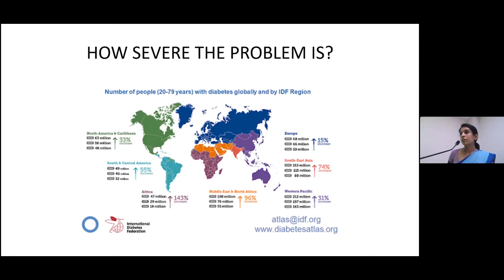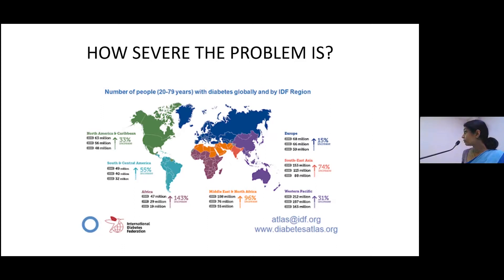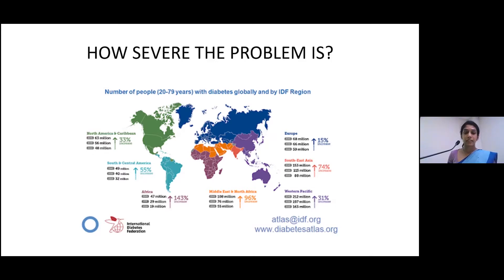This is the 2019 type 2 diabetes atlas published by the International Diabetes Federation. We all know that type 2 diabetes around the world is in constant rise. If you look carefully, there are certain regions to consider. The African continent is leading, followed by the Middle East and North Africa, and we are in third place. By 2045, the increase of diabetes will be 74% in our region.